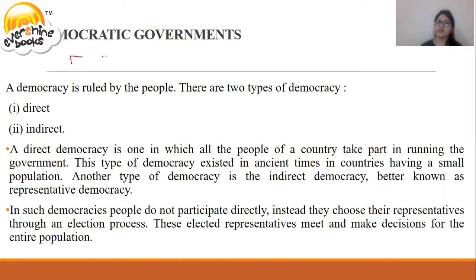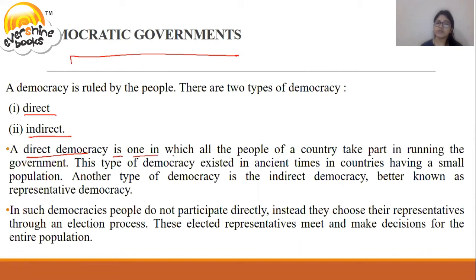Let's understand democratic government in more detail. There are two types of democracy: direct and indirect. In direct democracy, all the people of a country take part in running the government. This type of democracy existed in ancient times in countries having a small population.